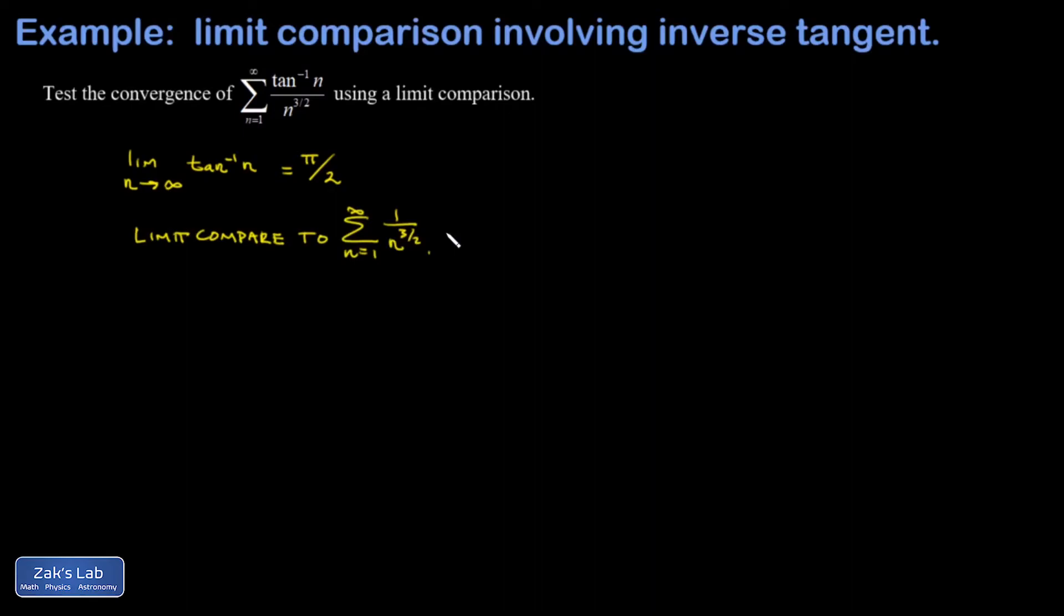Our series converges because 1 over n to the three halves is a convergent p-series. P refers to the exponent on the n in the denominator, and as long as that's bigger than one, your series is going to converge.